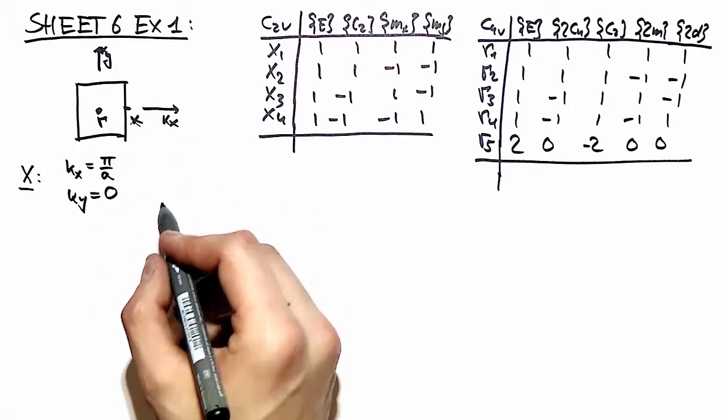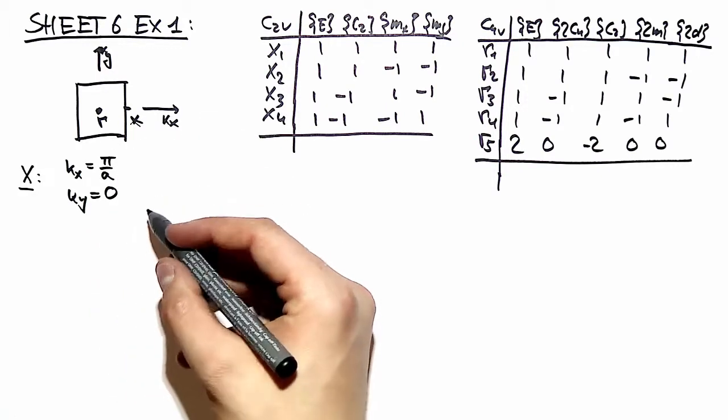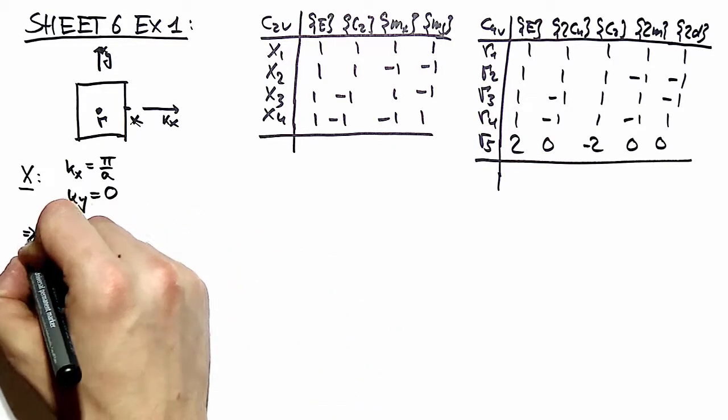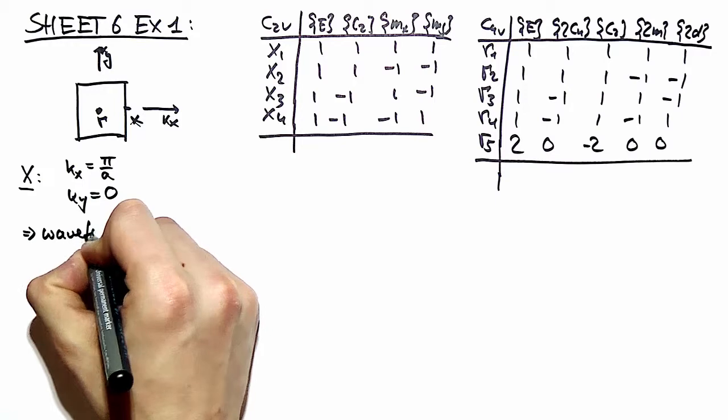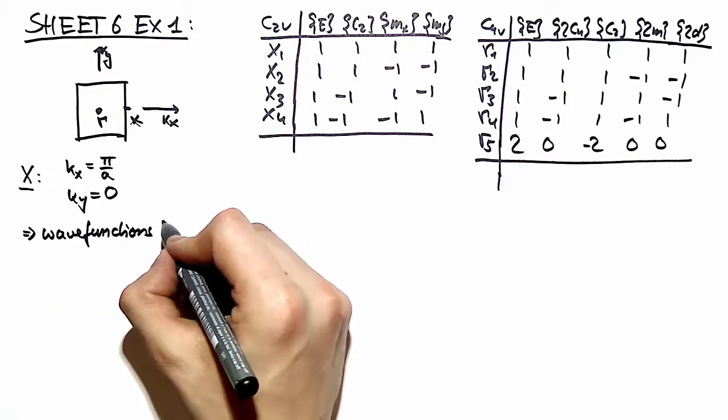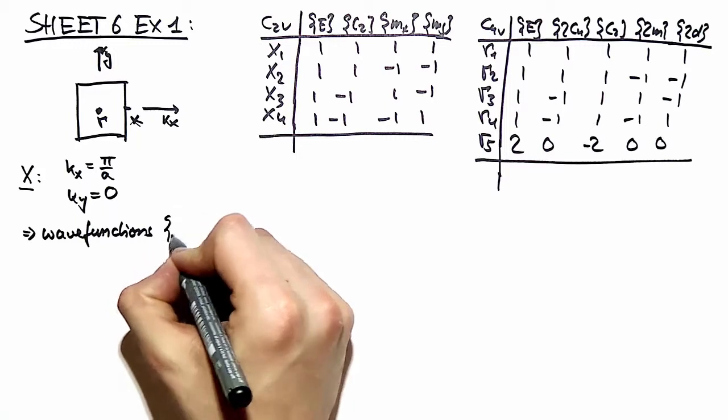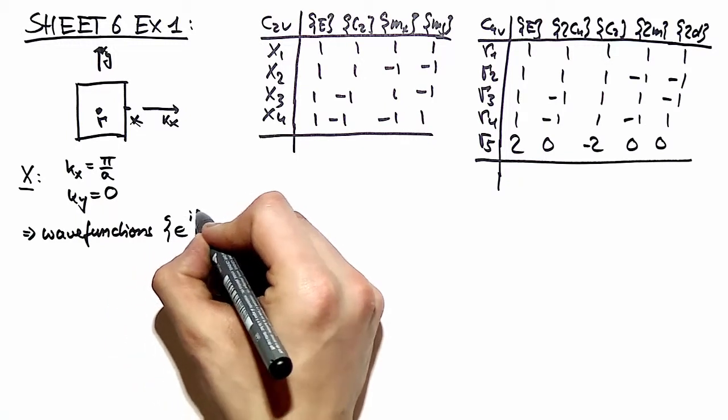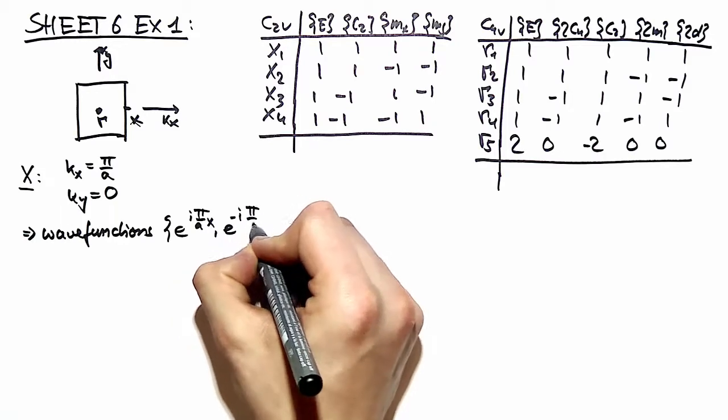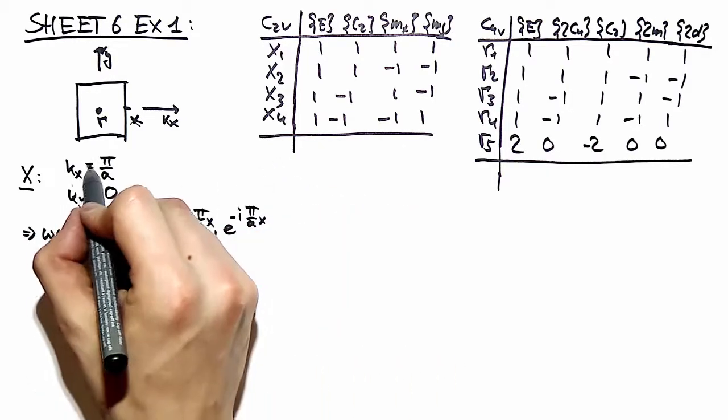So this gives us a basis with two different plane wave functions. We have wave functions which give us a basis for our two-dimensional representation which is e^(iπx/a) and e^(-iπx/a).